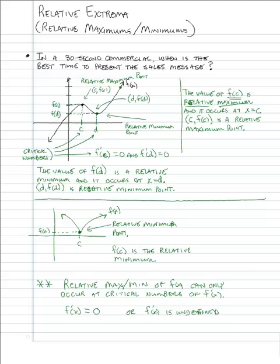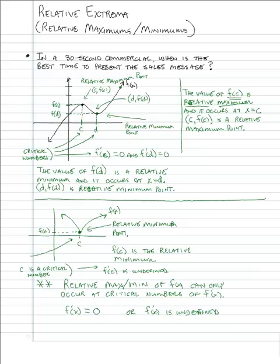In the second example, that c value is a critical number because when we have a sharp point on a graph, the derivative is undefined there — so f prime of c is undefined. These are the same critical numbers that we used to find when a function was changing directions, going from increasing to decreasing or vice versa. So this is a big deal about these critical numbers.